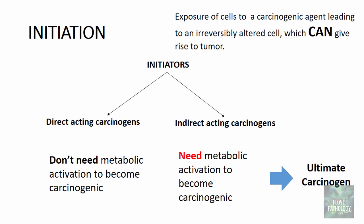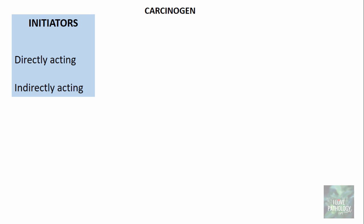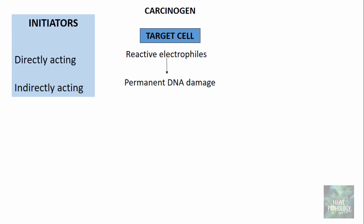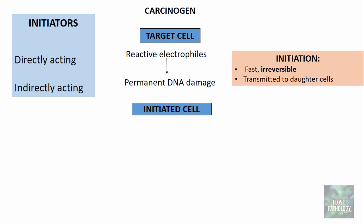A carcinogen, whether directly or indirectly acting, functions as an initiator. When it attacks the target cell, reactive electrophiles are formed. These reactive electrophiles are electron deficient and like to bind to electron-rich portions of the cell like DNA and RNA, causing permanent DNA damage. The cell with permanent DNA damage is known as an initiated cell. This initiation process is very fast, irreversible, and transmitted to daughter cells.